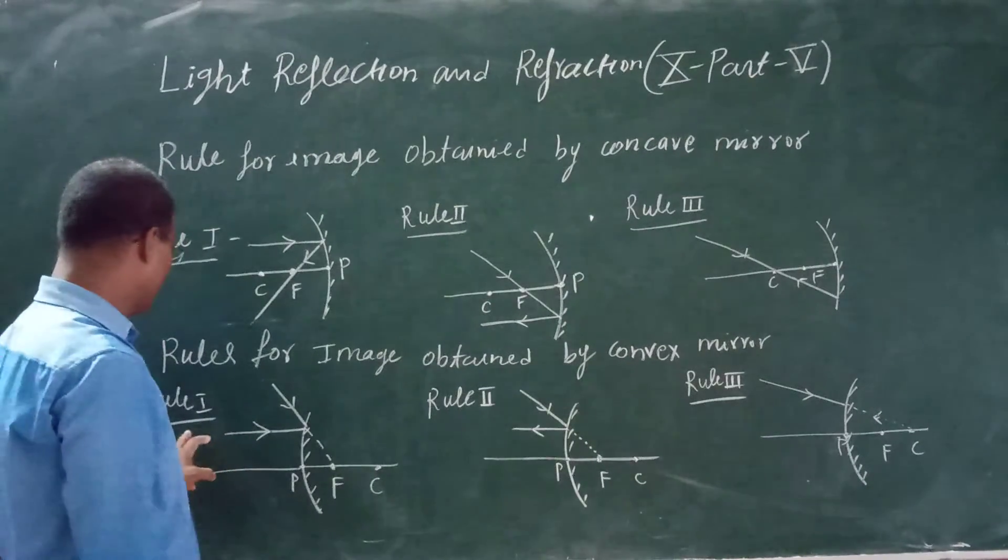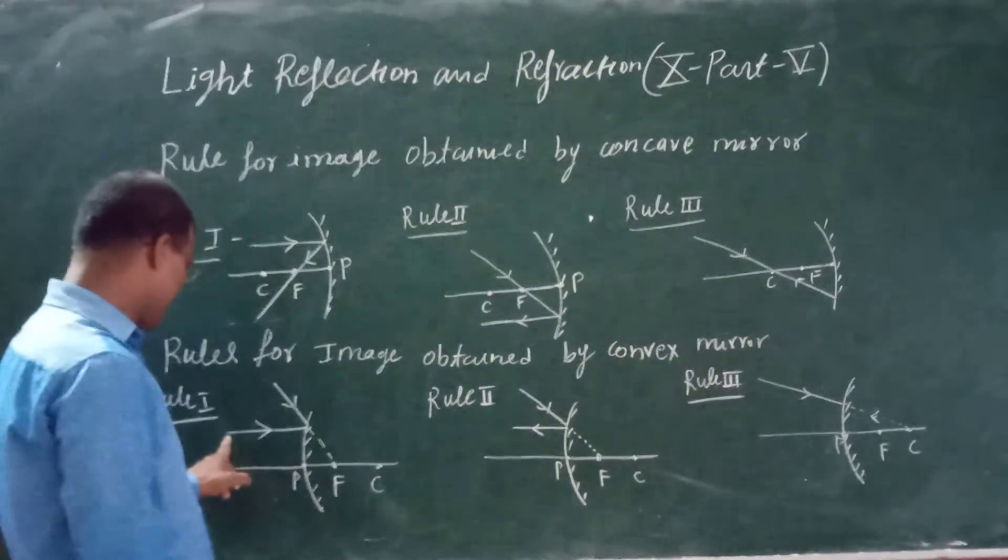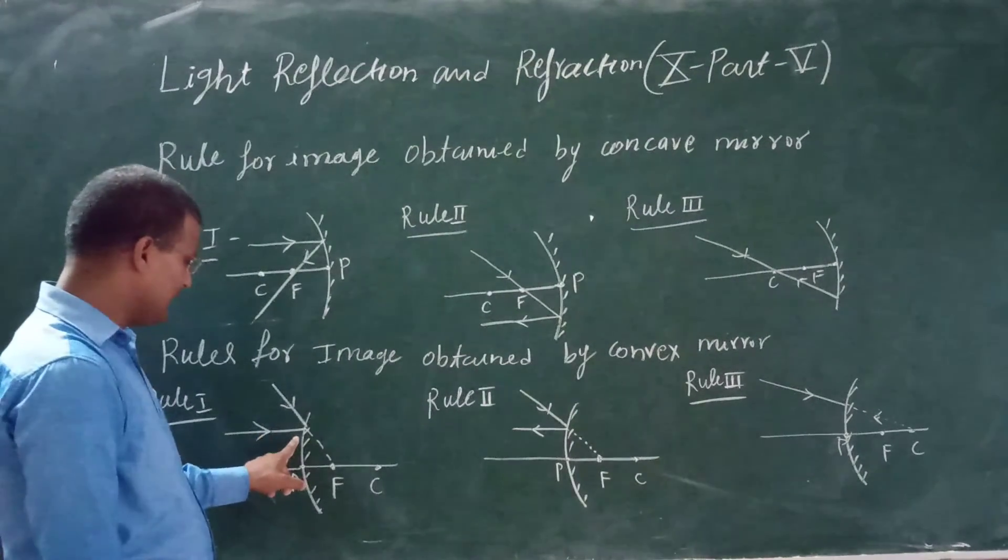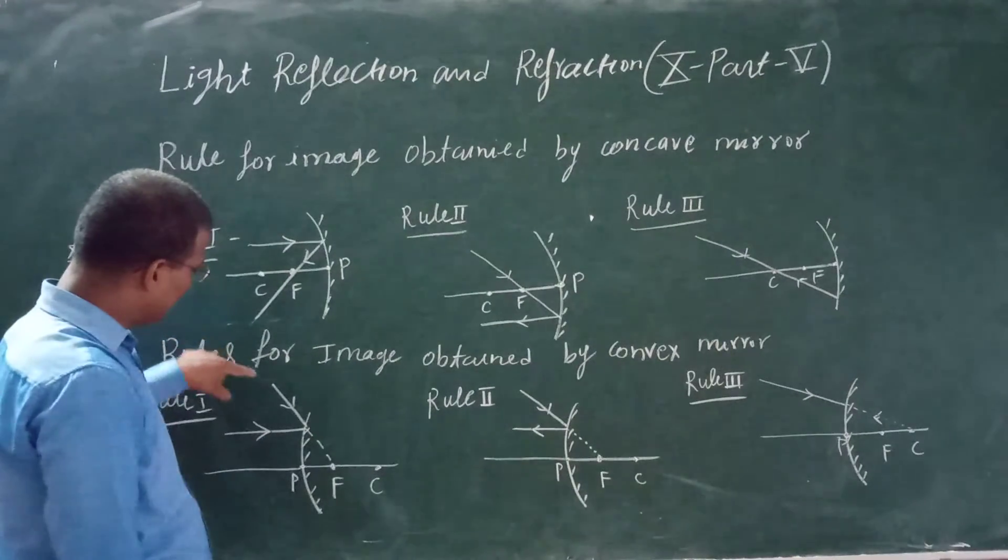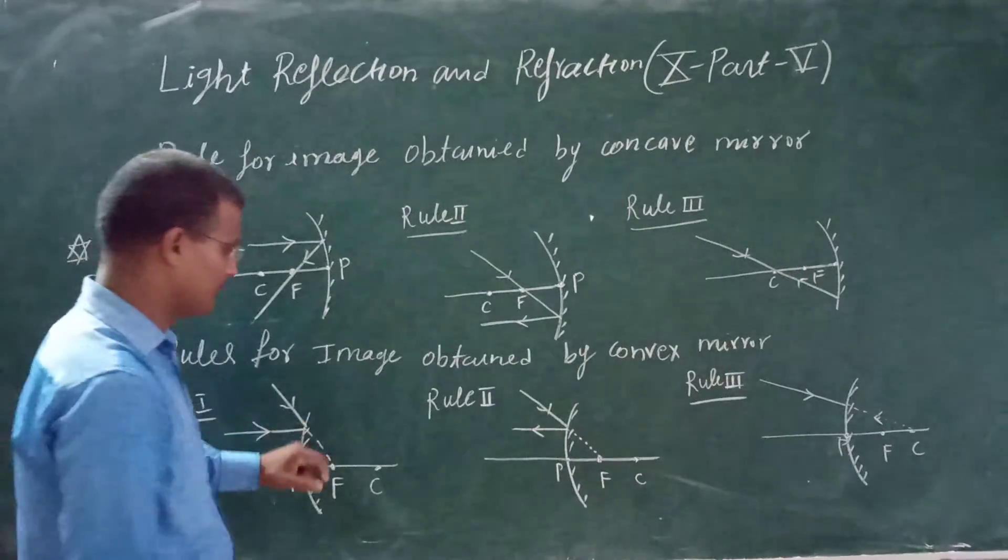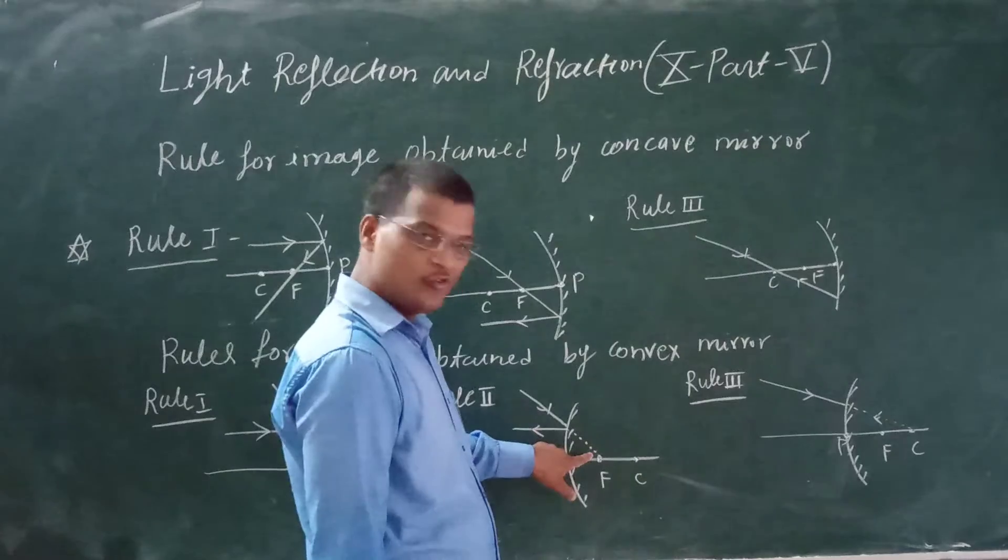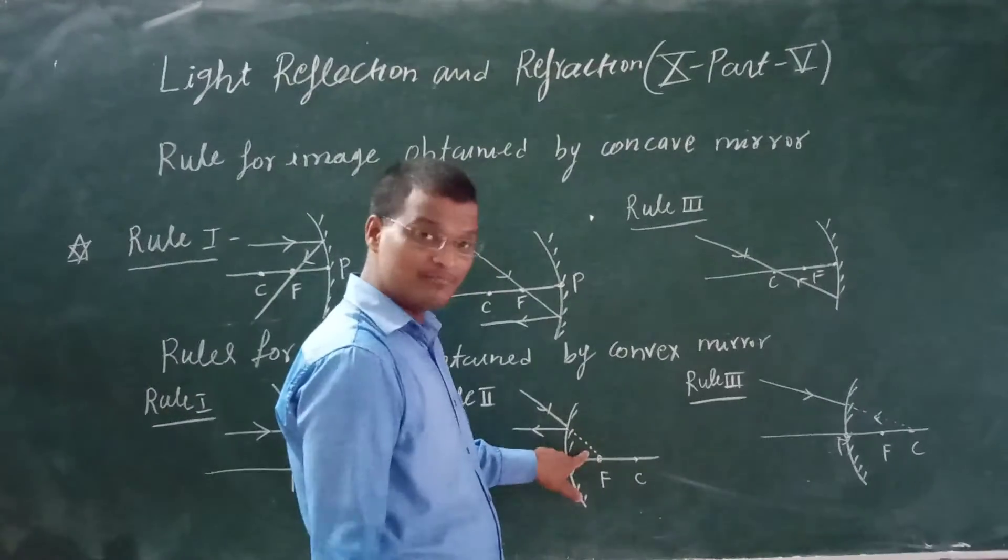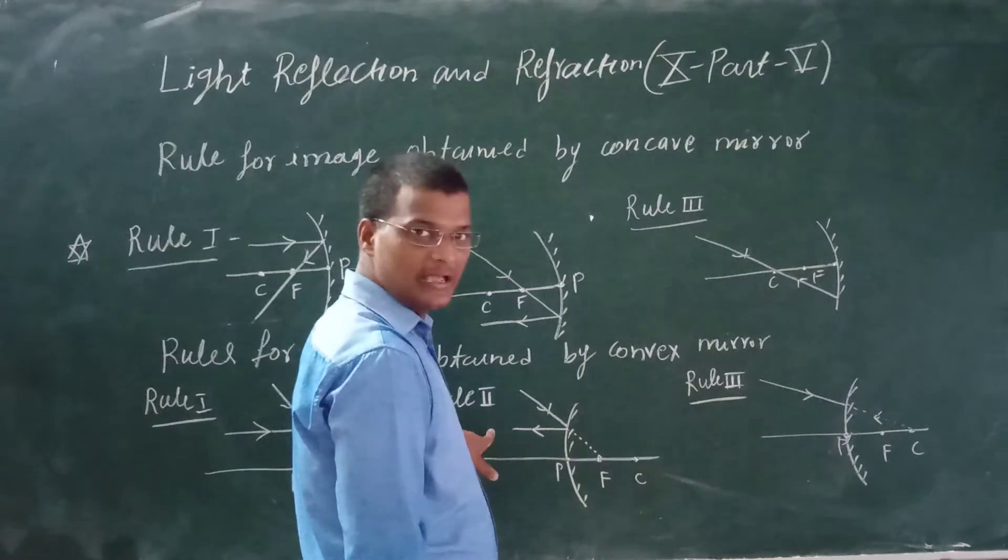Now you see, this is the convex mirror. For convex mirror, the principal axis is parallel. This is the ray diagram for convex mirror. If the ray comes from this direction, it will reflect toward the focus in this direction.